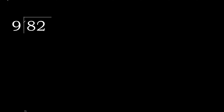82 divided by 9. 8 is less, therefore next. 82 is not less, therefore we work with 82. 9 multiplied by which number is nearest to 82 but not greater? 9 multiplied by 9.